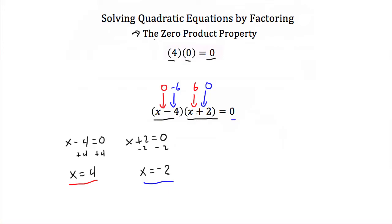So the way the zero product property works is, you're taking each term in parentheses, or each binomial, and you're setting it equal to zero individually, because these terms are all multiplied together. So as long as one of them equals zero, it doesn't matter what the other ones equal, because you're multiplying them all by zero.